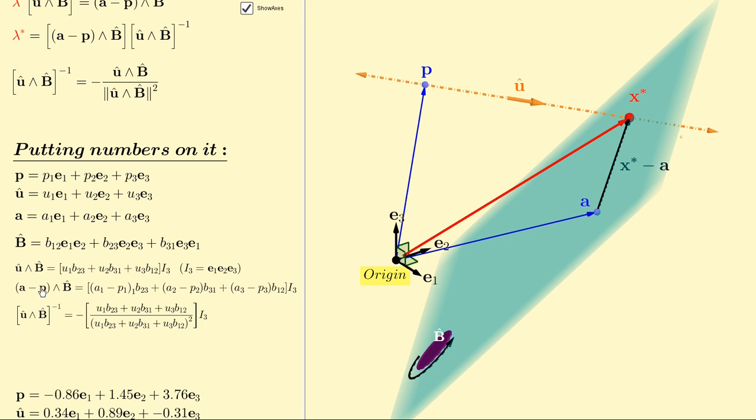Similarly, a minus p wedged with b hat is also a scalar multiple of i3, and so is u hat wedged with b hat's multiplicative inverse.